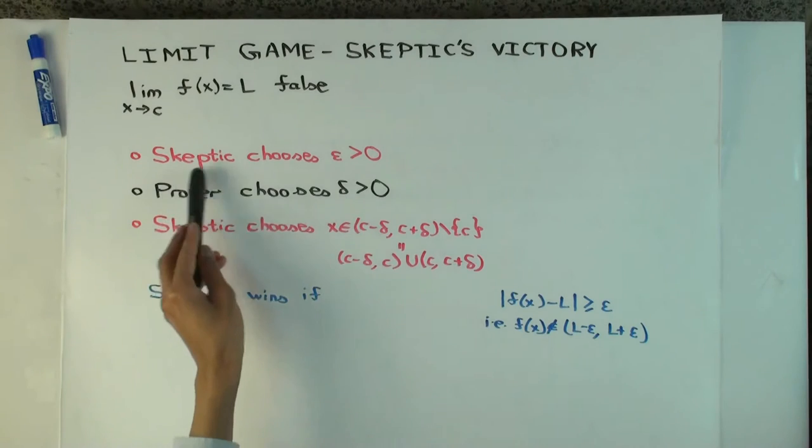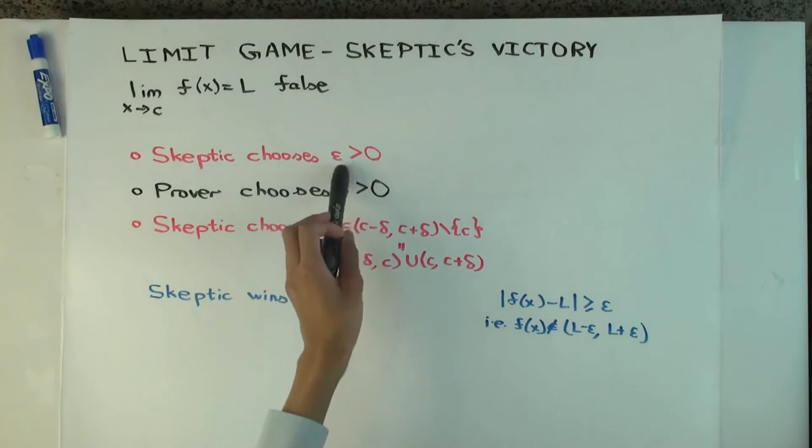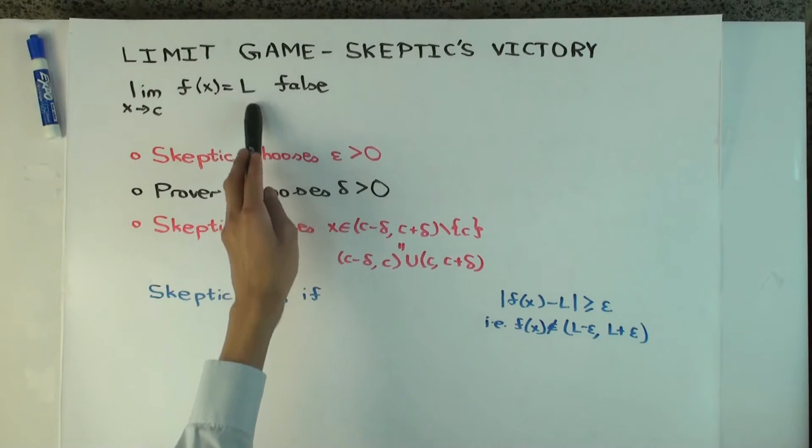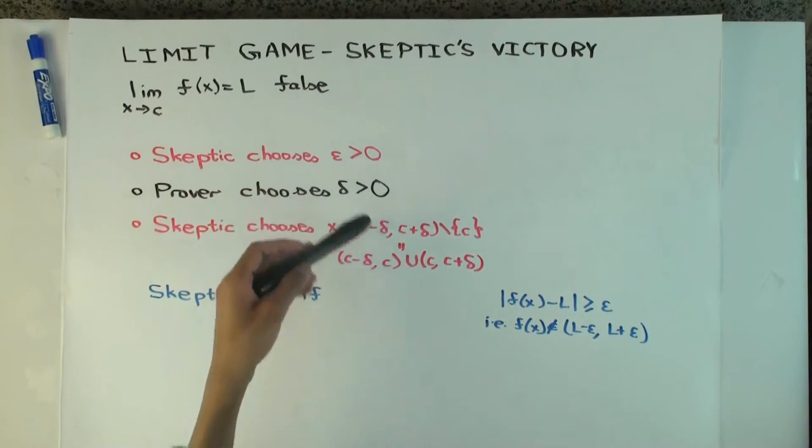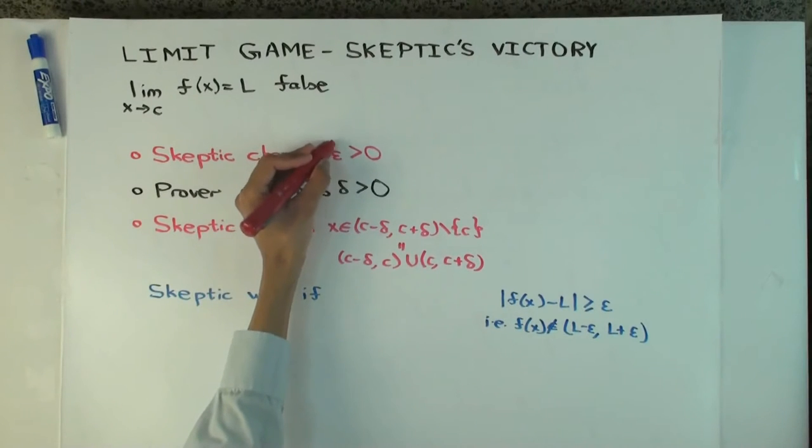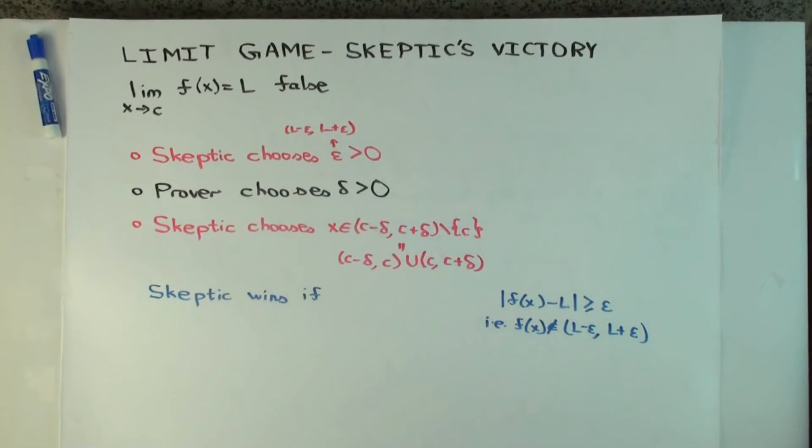And how does the game proceed? The skeptic begins by choosing an epsilon greater than zero. What's the skeptic effectively trying to pick? The skeptic is effectively trying to pick this neighborhood of L and trying to challenge the prover to trap the function value for x within that neighborhood. What's the neighborhood the skeptic is secretly picking? L minus epsilon to L plus epsilon.